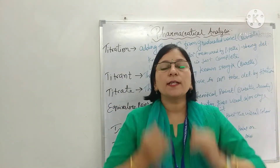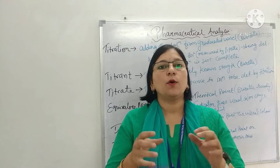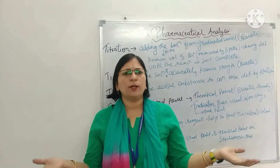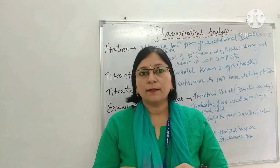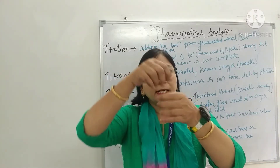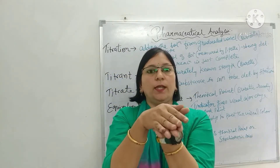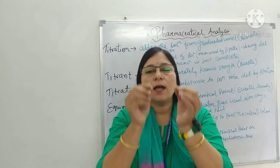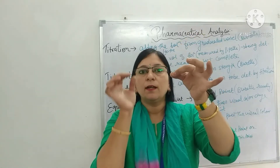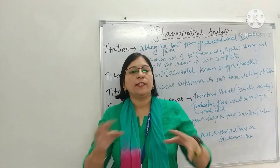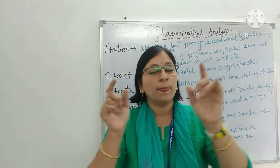समझे — दो चीज़ें हैं: equivalence point और end point। Equivalence point मतलब theoretical end point, जो हमने theory से निकाला। For example, अगर हम 10 ml NaOH और 10 ml KHP लें, तो theoretical reading 10 ml होनी चाहिए। But जब हम titration करने गए और indicator add किया, और burette तथा conical flask के solution की reaction complete हुई और color change दिखाया indicator ने, तब हमको दिखा कि 10 की जगह 10.1 reading आई है।